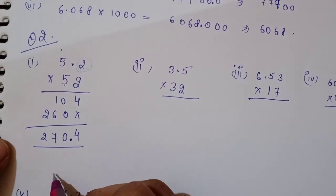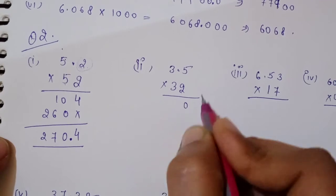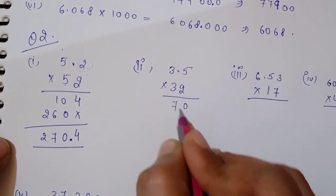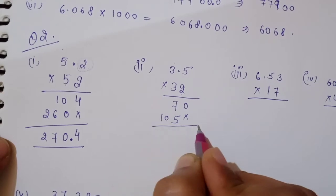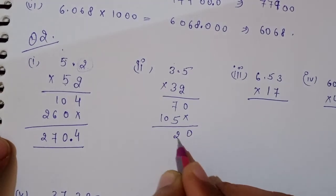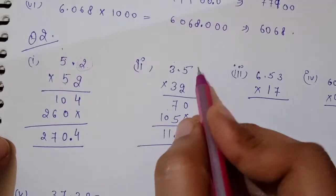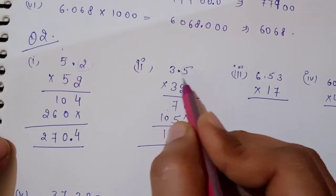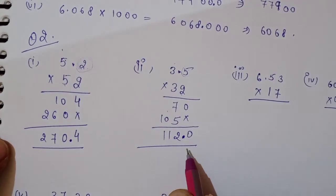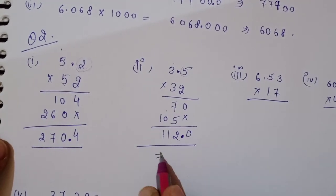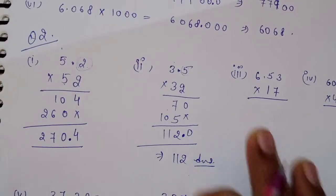This will be the answer. For question two, 3.5 × 32: 2×5=10, 2×3=6; 3×5=15, 3×3=9, carry gives 10. Add: 0, 7, 5, 12, 11. One decimal place — put decimal after one digit. Written as 112 because after-decimal zero has no impact.